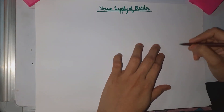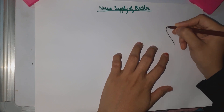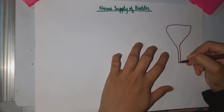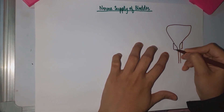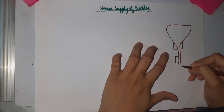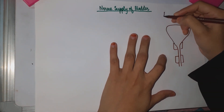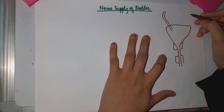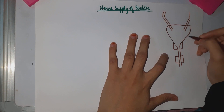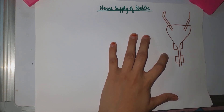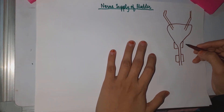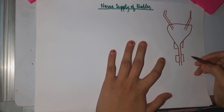First we will draw a diagram of the bladder. This is the bladder, this is the urethra, these are the internal sphincters — sphincters are nothing but a collection of muscles — these are the external sphincters, and this is the ureter which opens at an angle to prevent reflux of urine. This bladder consists of detrusor muscle, which are smooth muscles. The internal sphincters are also made up of smooth muscle, and the external sphincter is made up of striated muscles.